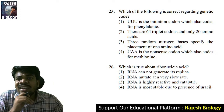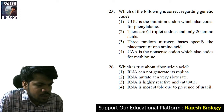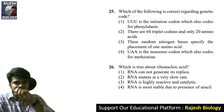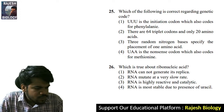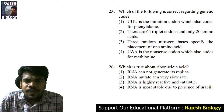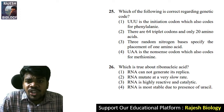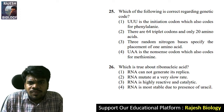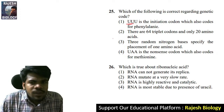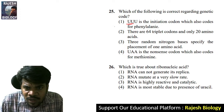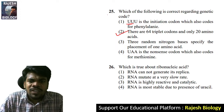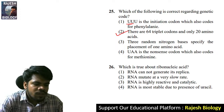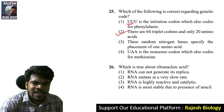Question 25: which of the following is correct regarding the genetic code? Triple U is an initiation codon which also codes for phenylalanine — this is wrong; triple U is not an initiation codon. There are 64 triplet codons and only 20 amino acids — this is right. The right answer is option two.